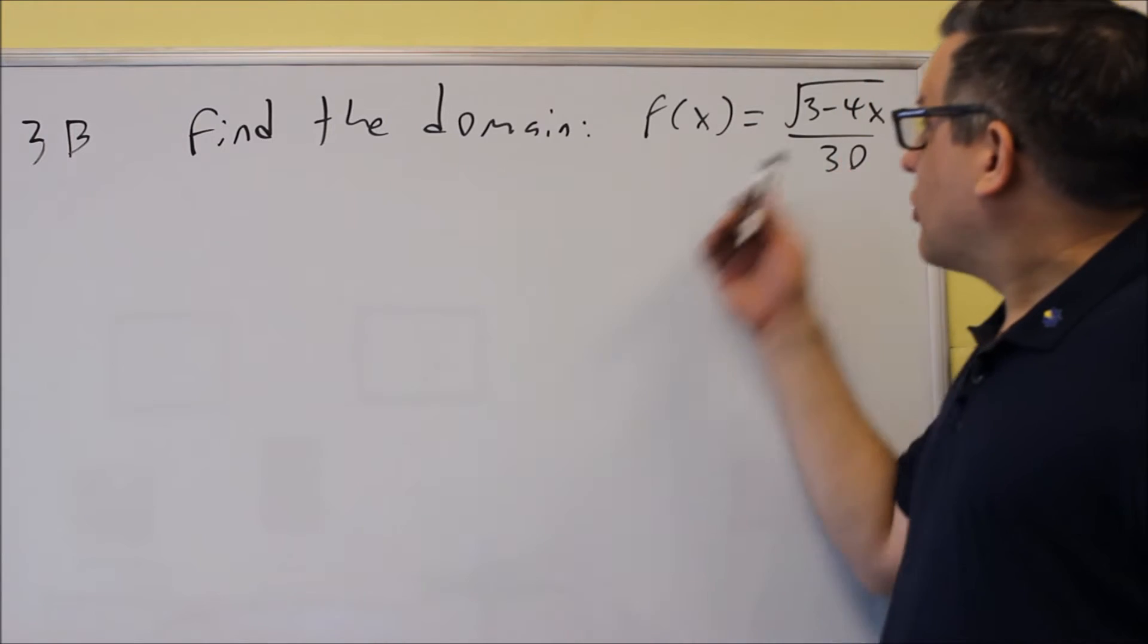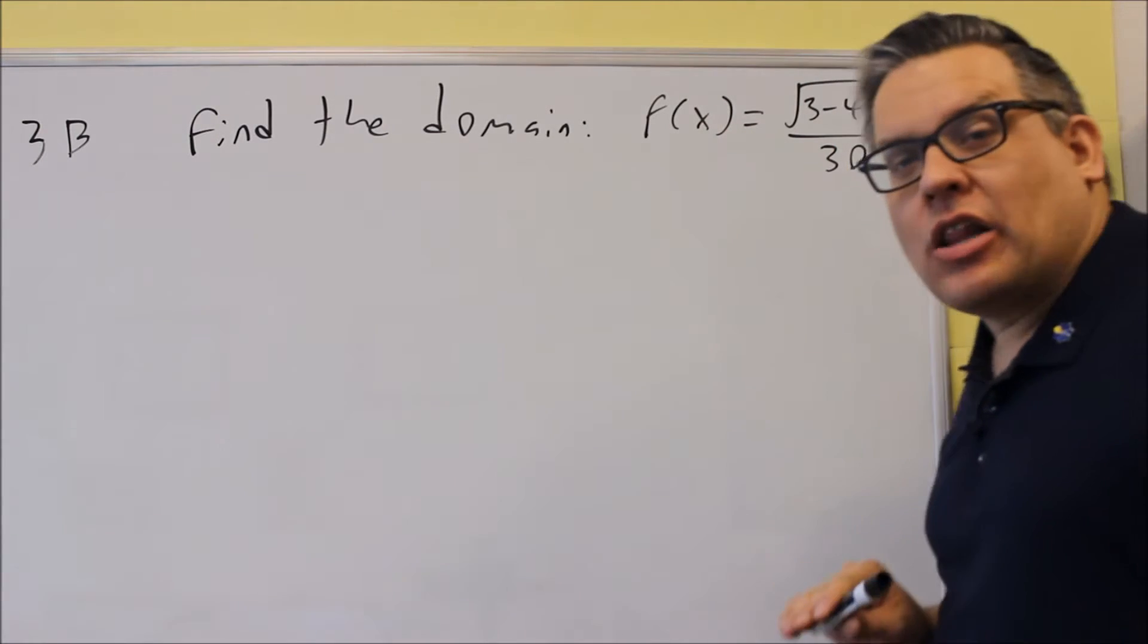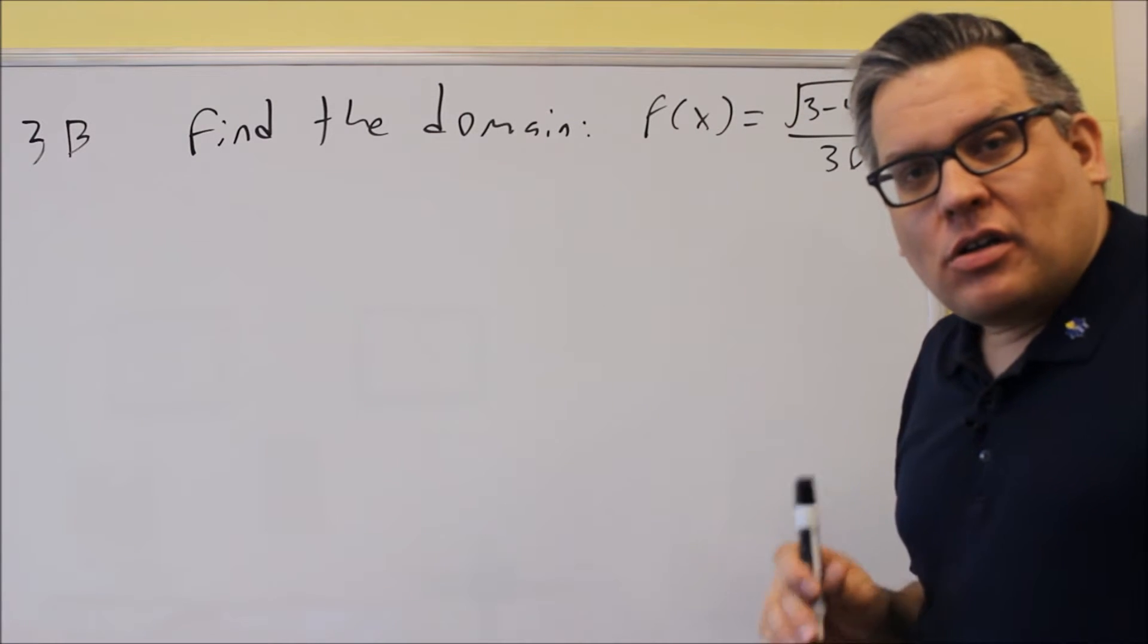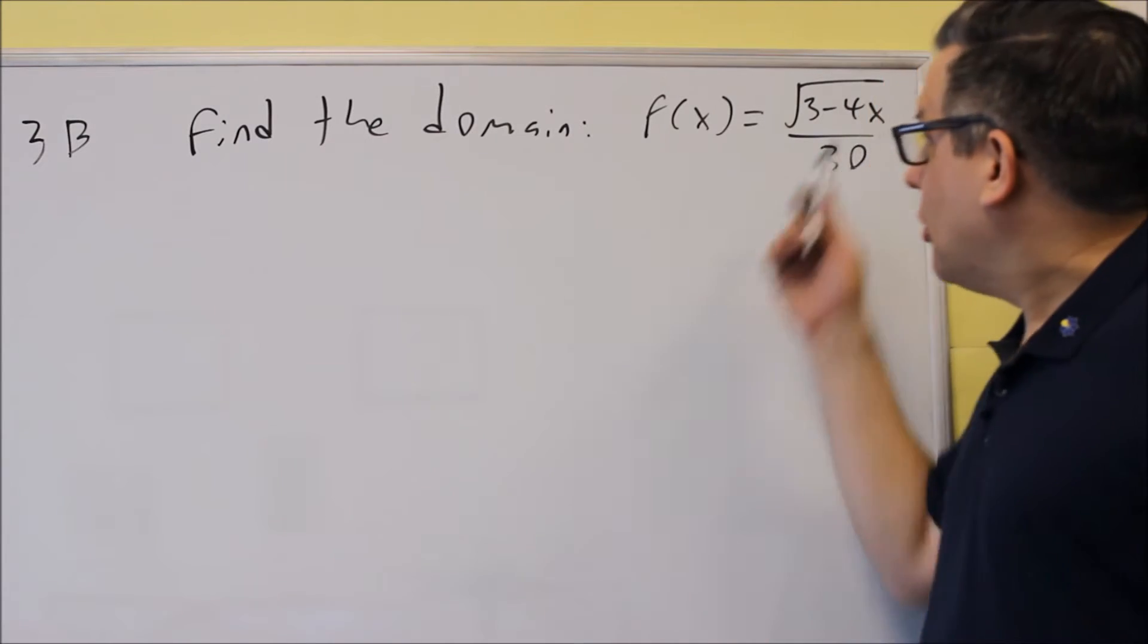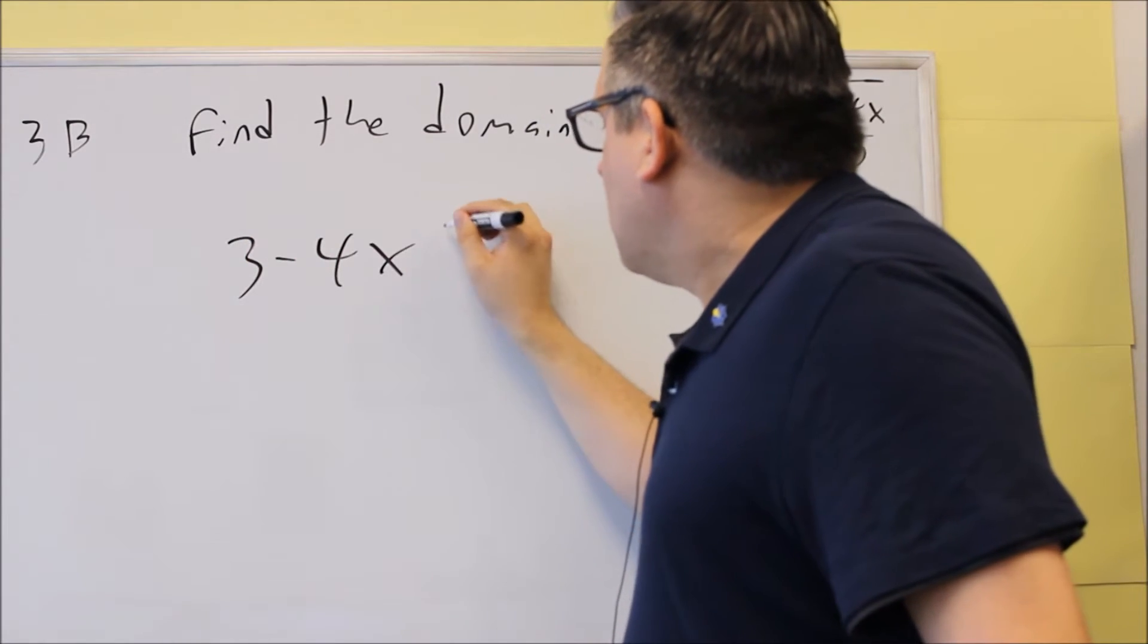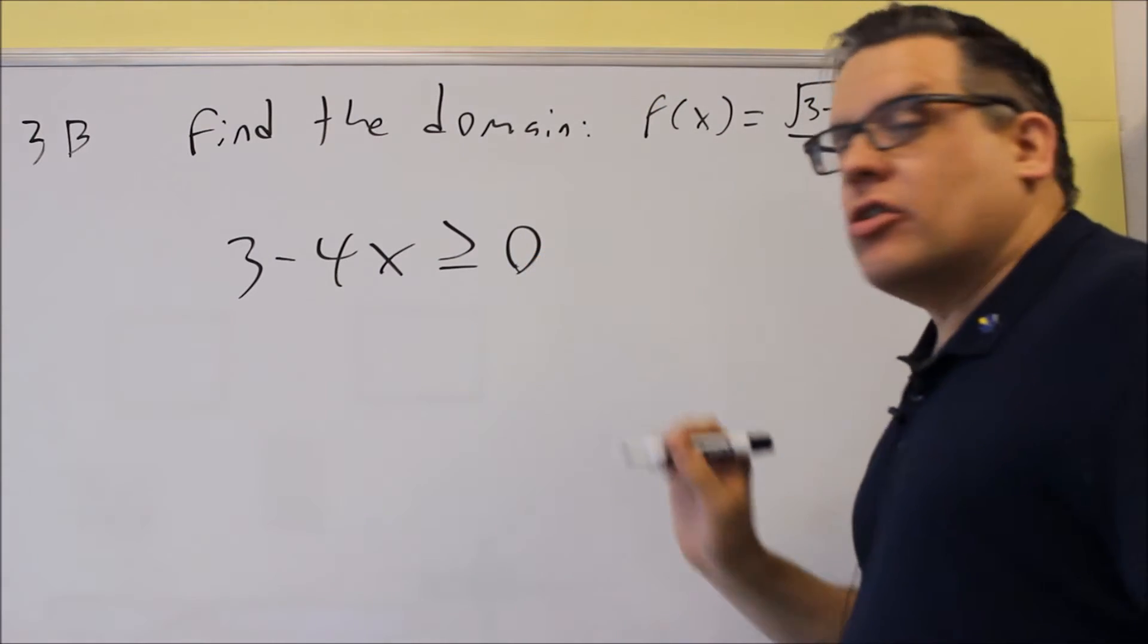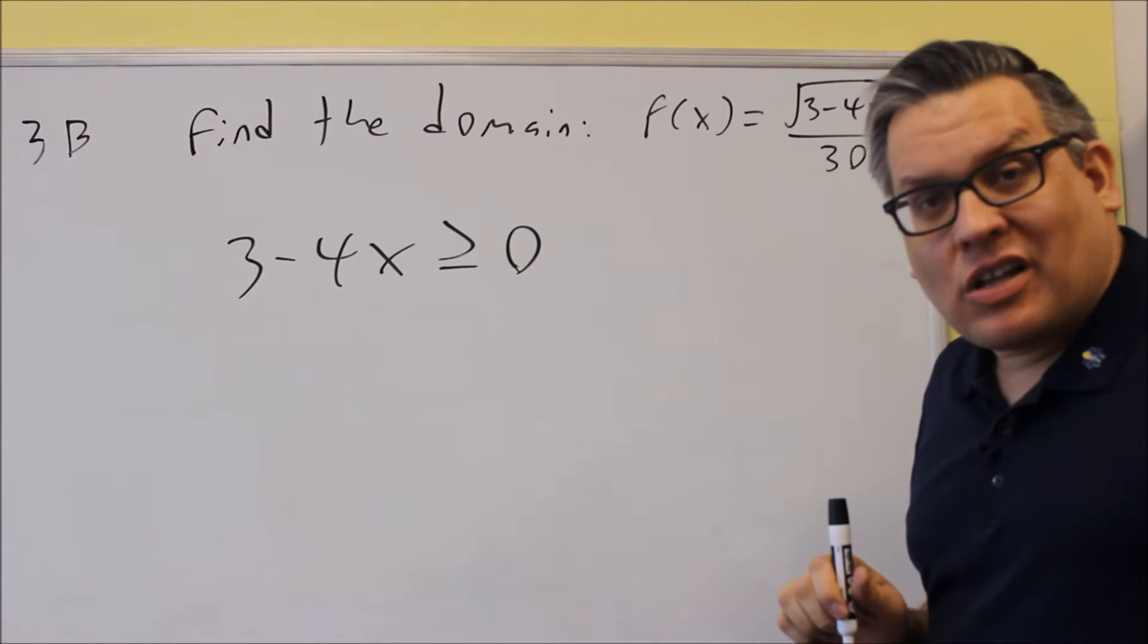For 3B, we also have a square root, but the square root, notice this time, is not on the bottom of the fraction. Since the square root is on top, now zero is allowed, because we just can't divide by zero, but if we have zero over a number, that's okay. We'll just get zero for our answer. So we're going to do 3 minus 4x, and we're going to set that to be greater than or equal to zero. Zero is allowed this time because you have a square root on the top.